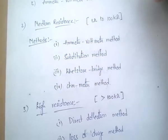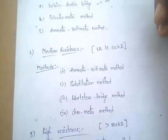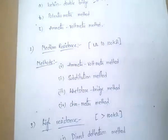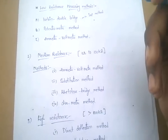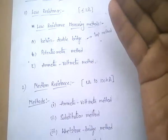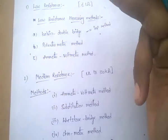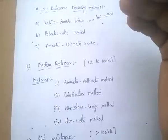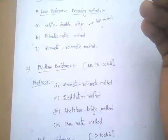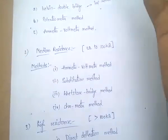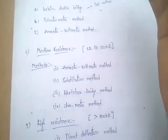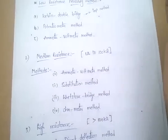Once again: resistances are mainly low resistance, medium resistance, and high resistance. Low resistance is less than 1 Ohm, medium resistance is from 1 Ohm to 100 Kilo Ohms, and high resistance is greater than 100 Kilo Ohms.